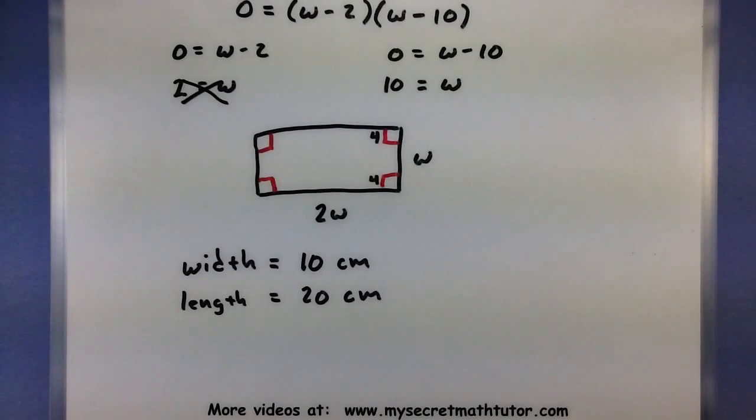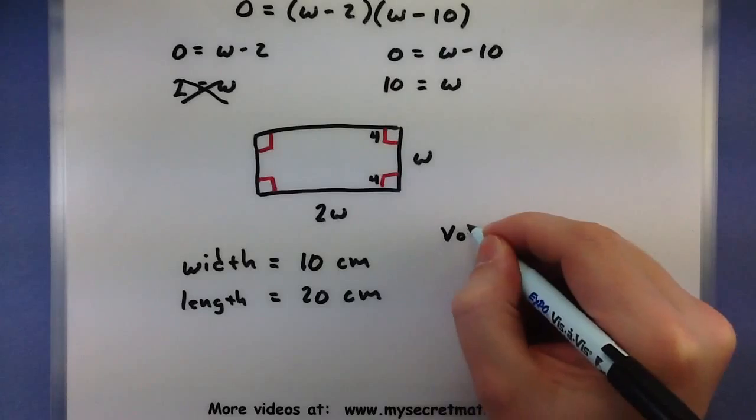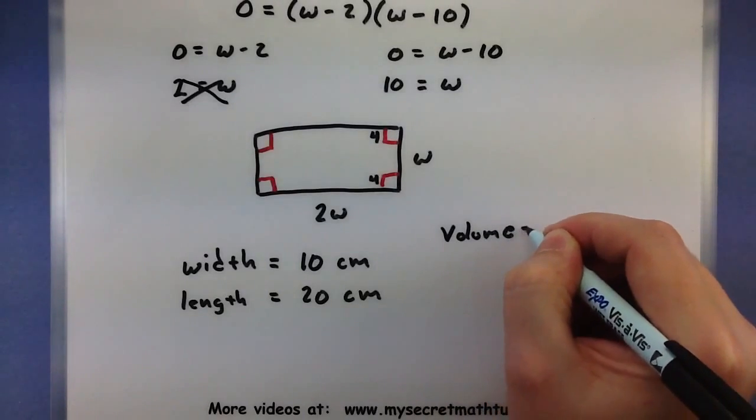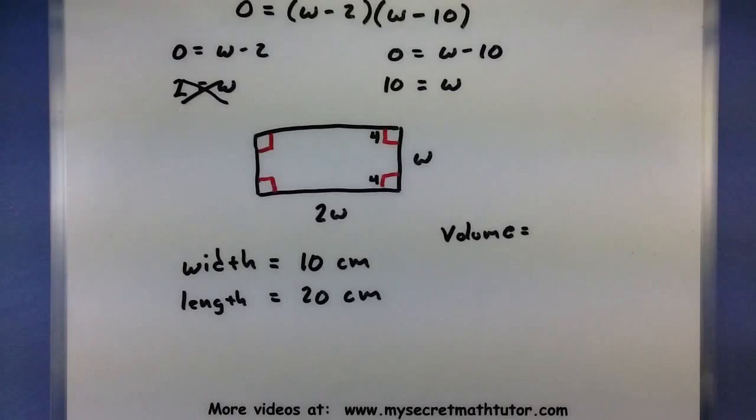Now, one quick thing that you probably want to do is double check that the volume of the box we created actually turns out to be 96. So the volume is created by taking the length, the width, and the height of the box once it's folded up.